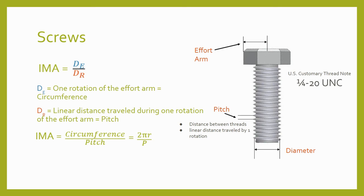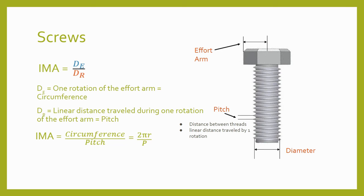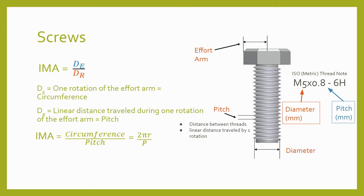In US customary thread notes, the first number tells the diameter of the threaded portion of the fastener, and the second number indicates the number of threads per inch (TPI). This is different from the pitch — the pitch is the distance between threads, or the linear distance traveled by the screw in one rotation. For example, a screw turned 20 times to travel one inch has a pitch of one-twentieth of an inch. In metric thread notes, the note starts with the letter M for metric followed by the diameter in millimeters, and the next number is the thread pitch also in millimeters. To learn more about thread notes, check out the lesson on reading hole and thread notes.